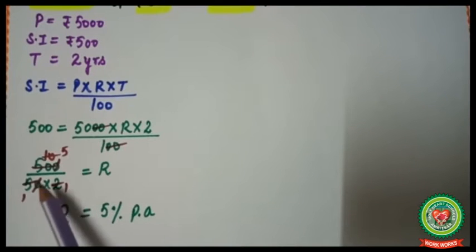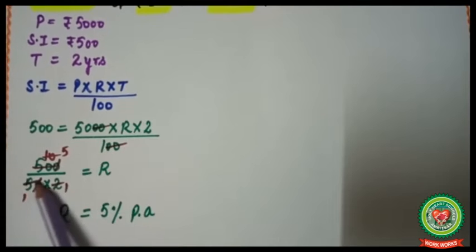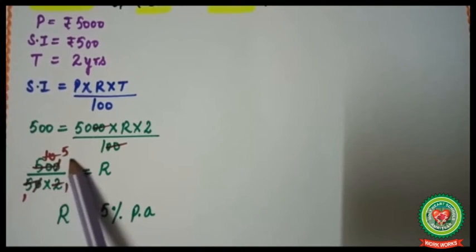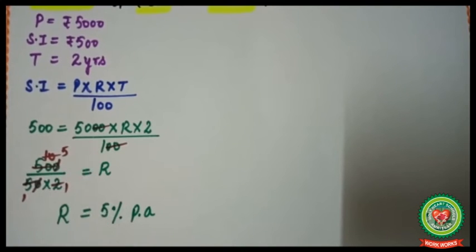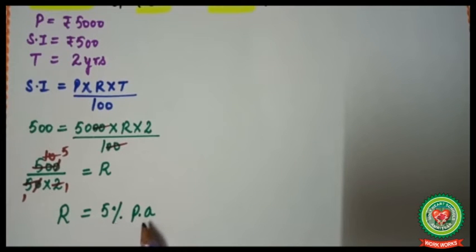Doing the cancellation: zeros cancel, and using the five and two tables, R = 5 percent per annum. That is what we needed to find — the rate is 5% per annum. Now let's move to the next example.